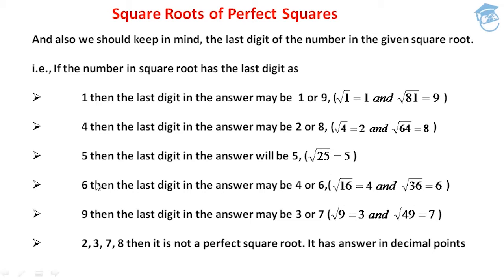When the last digit under the square root is 6, then the last digit in the answer may be 4 or 6. Because √16=4 and √36=6 — both have 6 as their last digit. So whenever we get last digit 6 under the square root, the answer's last digit could be either 4 or 6.